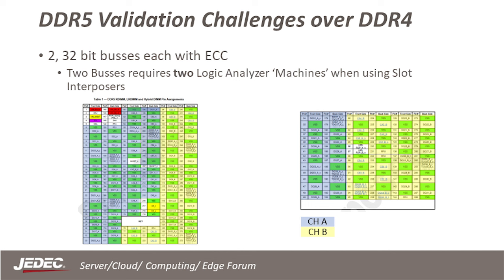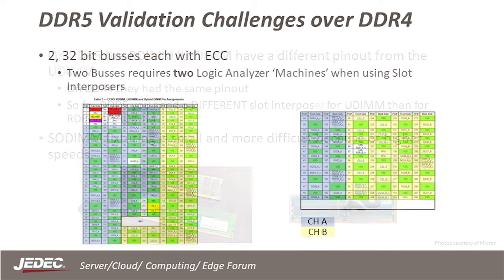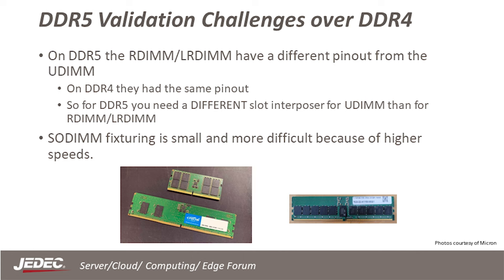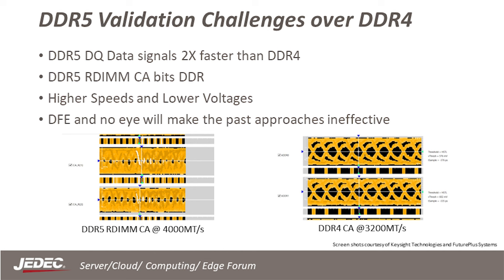A difference in DDR4 and DDR5 is that in DDR4 we could see the entire bus with three LA cards, but for DDR5 it will take four — including the address, command, control, and data. Unlike DDR4, for DDR5 we have different pinouts for the UDIMM and the R/LRDIMM. This means we cannot share interposers between an RDIMM system and a UDIMM system, which makes debug more expensive. Since the speeds are faster than DDR4, the interposers are more difficult to route and require smaller features, adding more cost.